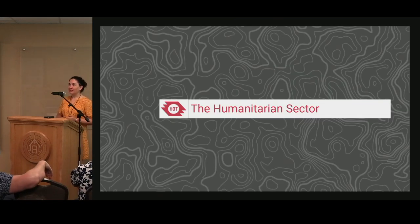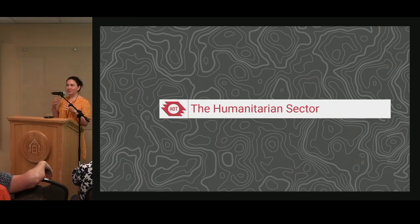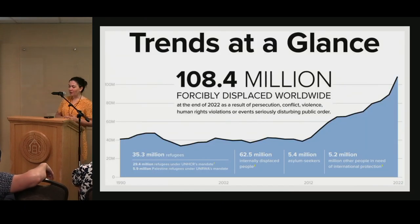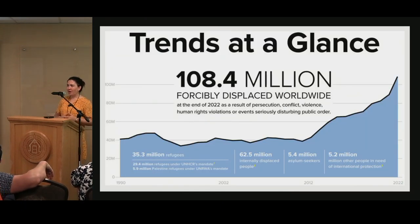I wanted to give some background to the humanitarian sector to put this work in context, and then a little bit later we'll get more into OpenStreetMap. So what is the humanitarian sector? There are different populations that humanitarians work with — to benefit, I guess is the way to say it.